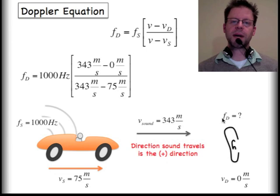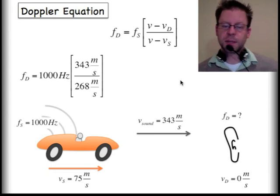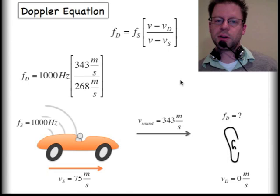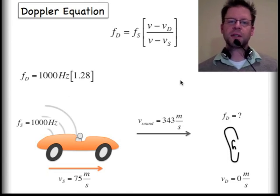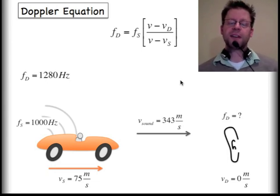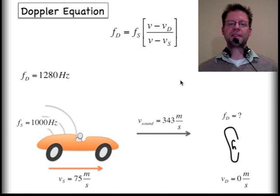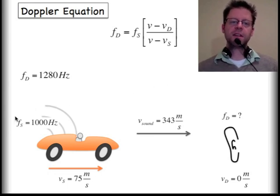From there, I can plug in my numbers. I've got the speed of sound here, the speed of sound there. Notice that I get a minus sign strictly from the equation. I have minus zero in the numerator, minus 75 below. I'm going to simplify that down. My meters per second units will cancel. And I can really further simplify this down to a factor of 1.28. And I can find that the frequency that is perceived at the detector will be 1,280 hertz, even though the frequency of the source is 1,000. So, it actually has a higher pitch sound.